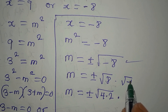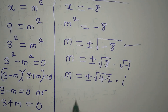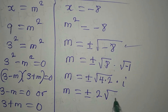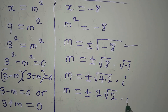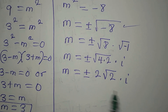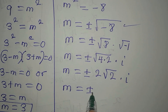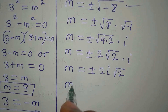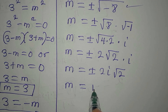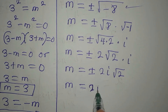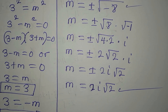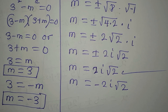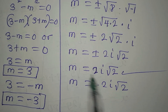Breaking down root 8, m equals plus or minus the square root of 4 times 2, then multiplied by the square root of negative 1 which is i. So m equals plus or minus 2 times root 2 times i, which we write as plus or minus 2i root 2. This is a two-in-one solution, so m equals positive 2i root 2, and m equals negative 2i root 2.